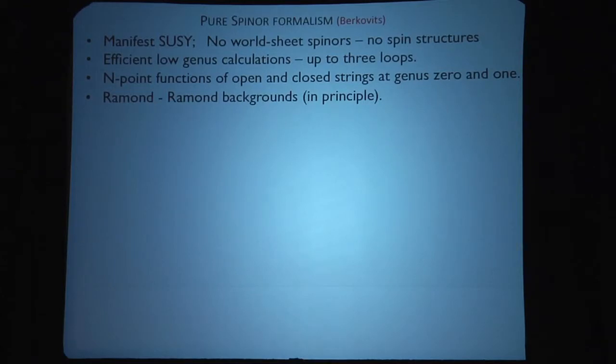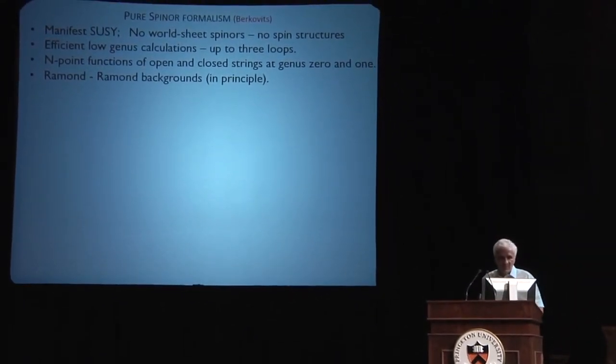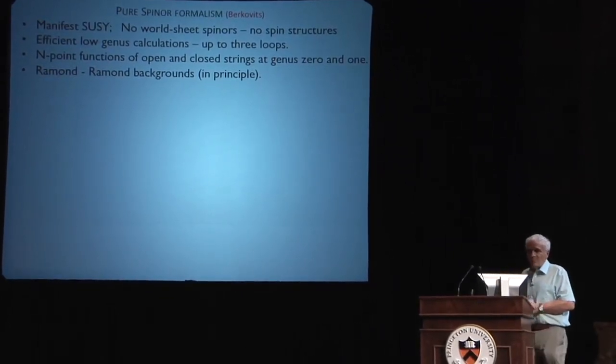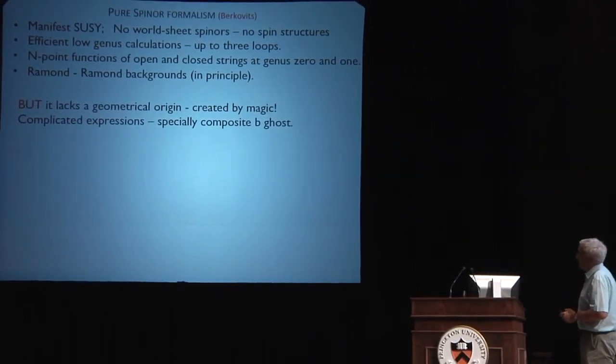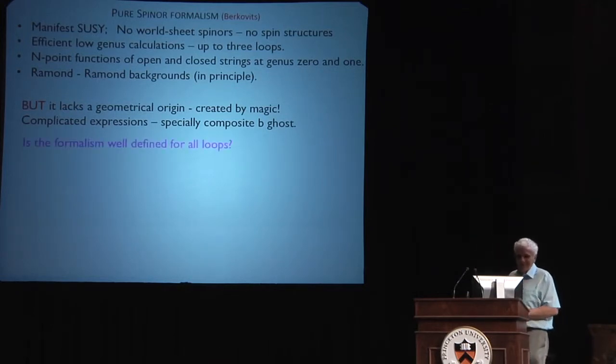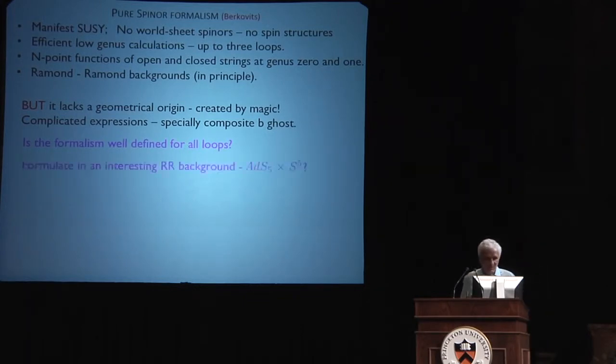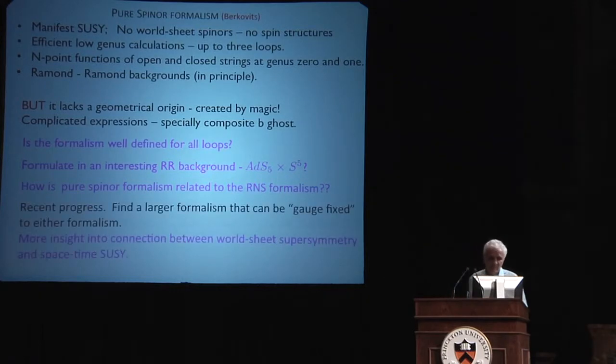I'm going to flash through this because I've got no time, but the pure spinor formalism is a very efficient formalism for looking at low genus calculations. It's the formalism that was used by these people I just mentioned to look at the N-point functions for open and closed strings. In principle, it's a formalism that's useful for looking at backgrounds containing Ramond-Ramond fluxes, but it lacks any intuitive geometrical origin. It was created by one person as if by magic, so there were questions about whether it's something that could be used, is well-defined even, for higher loops. That's a question that one should try and understand, and in particular, it would be very nice to understand how this formalism might be related to Ramond-Neveu-Schwarz.